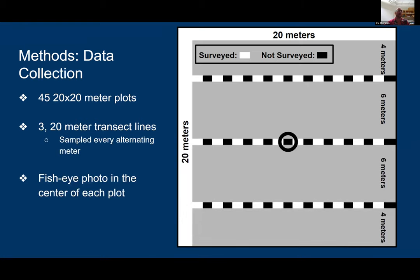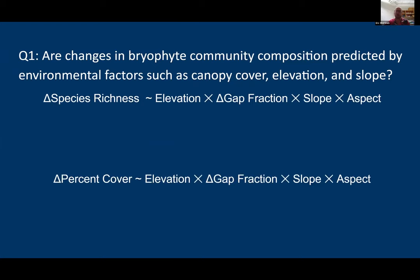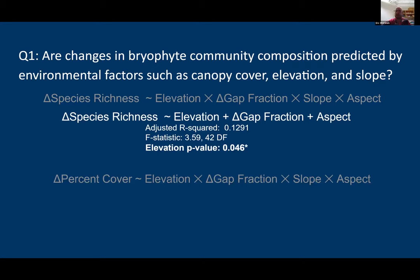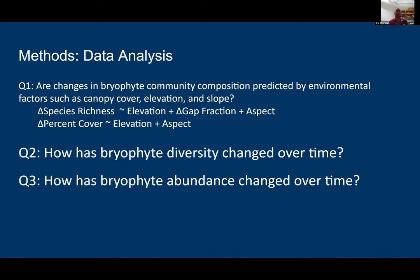With abundance, presence-absence, and canopy cover data in hand, I ran two general linear models. Change in species richness and change in percent cover between the two time points were the response variables, with elevation, change in gap fraction, slope, and aspect as predictor variables. After a stepwise AIC function, I found that change in species richness was predicted by elevation, change in gap fraction, and aspect, but elevation was the only significant predictor. For change in percent cover, elevation and aspect were predictors but neither was significant.